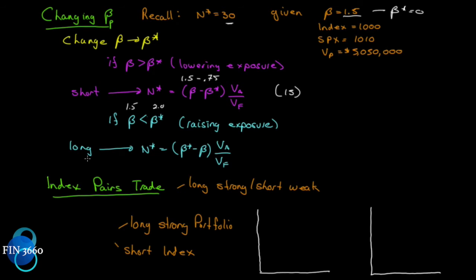That means we want to be long a certain number of contracts, and it would be instead of beta minus beta star, beta star minus beta times the original value of our portfolio divided by the value of one contract, and this will give us the long exposure that we need.